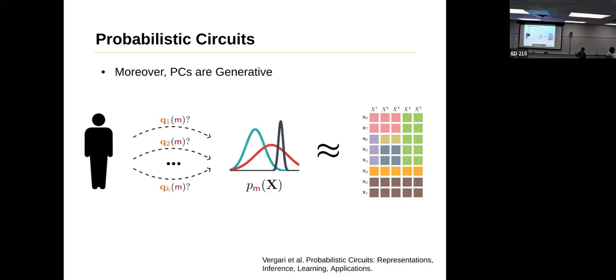Moreover, the PCs can be very generative because since you are able to model the probability of C given X when you're doing classification, we can do the opposite thing, in which you can model the probability of the data given C. Therefore, we can really generate from possible missing data.